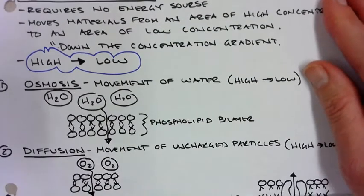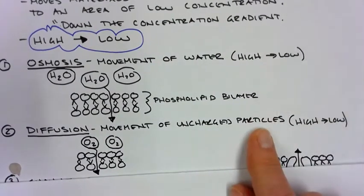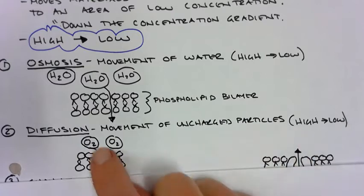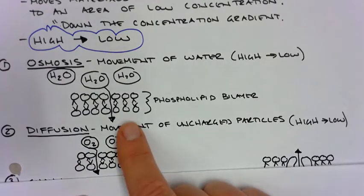Another one is called diffusion. Diffusion is the movement of uncharged particles from high to low. So for example, in your lungs, oxygen flows right through and carbon dioxide flows back out again.